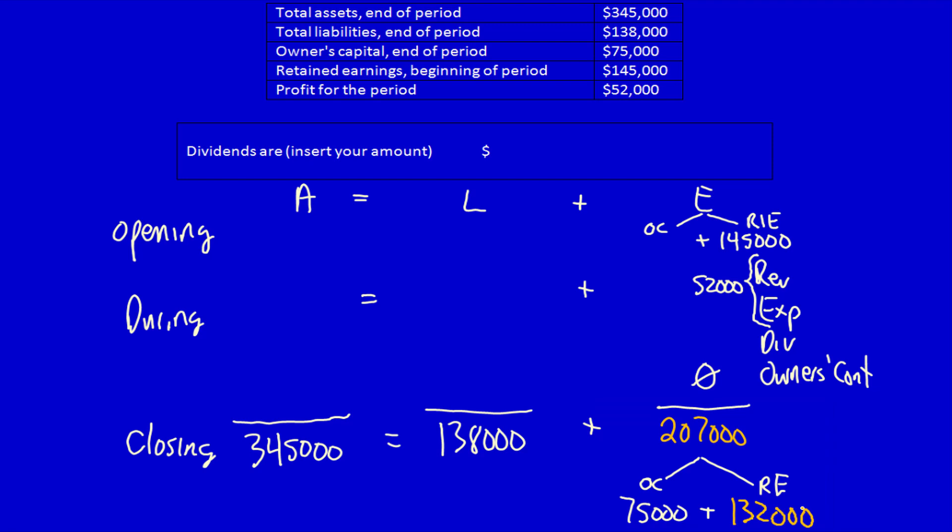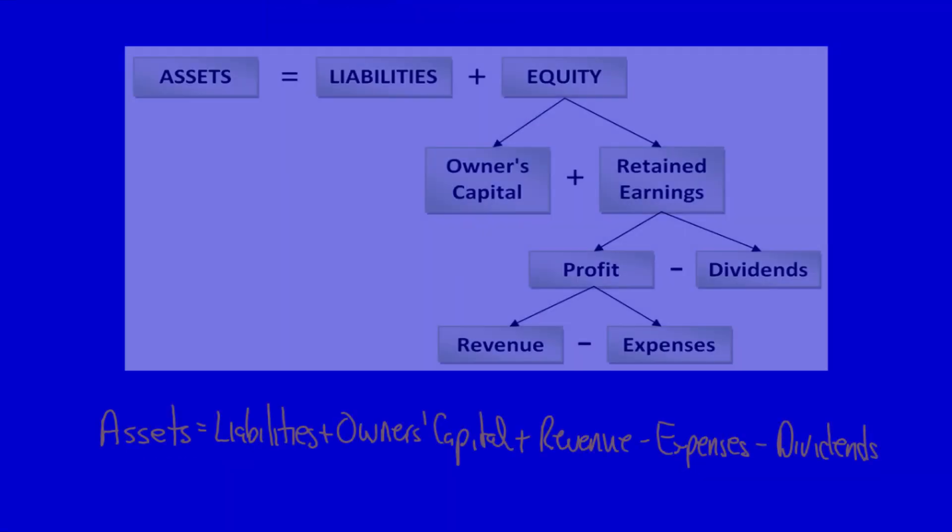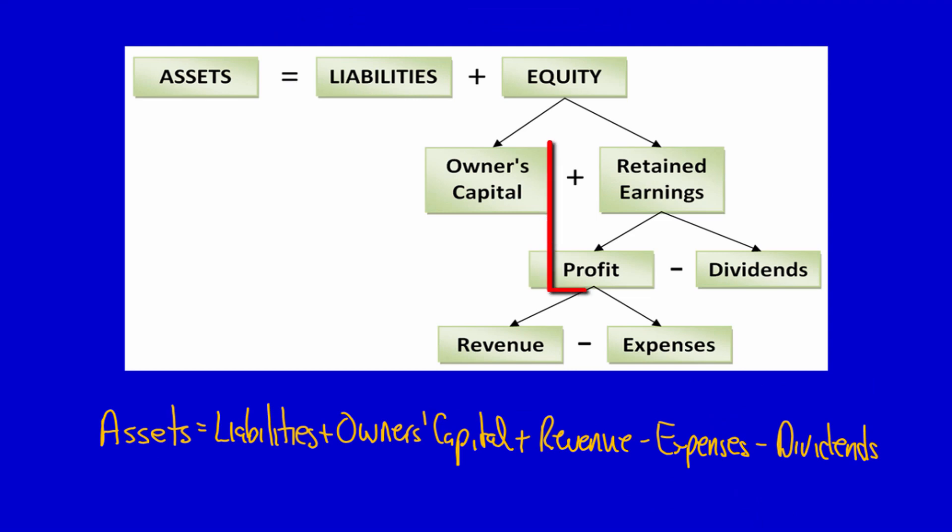Now remember from the flowchart, let's just flip back to the flowchart for a second. Retained earnings equals profit minus dividends.